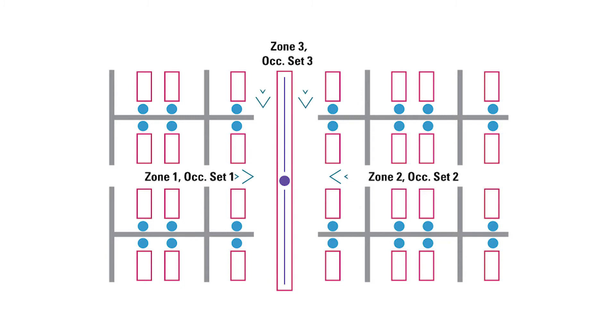This video will use the same application but will add an additional requirement. The walkway zone lighting must turn on or remain on, not only with motion in the walkway, but also if there is motion activity in either of the two cubicle zones.